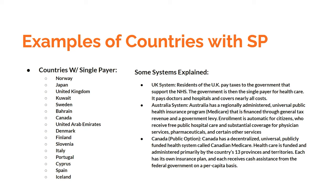On the left is a list of countries with single payer — some may be missing, like Australia, which we'll cover on the right. For the UK: residents pay taxes that support the National Health Service. The government is the single payer — it pays doctors, hospitals, and covers nearly all costs. A lot of literature refers to the UK system as a one-for-one comparison for what the US could look like, and it's something you should be really familiar with for affirmative cases.